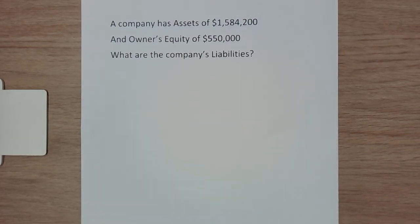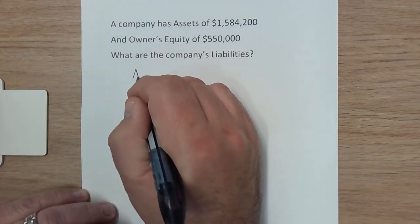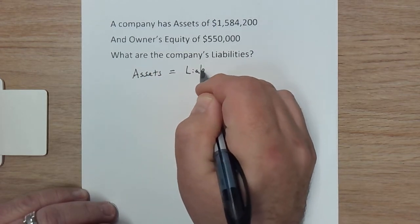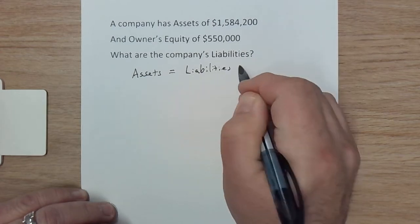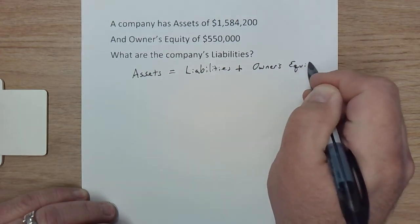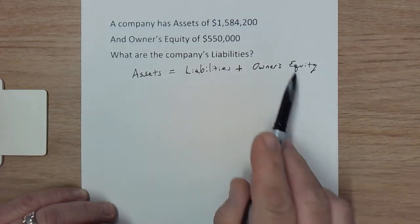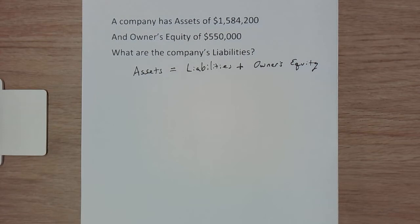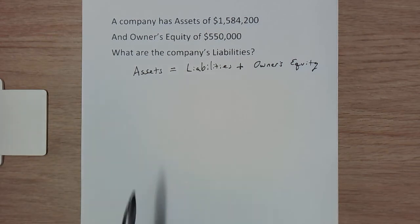I'm going to show you how you can figure that out using the accounting equation. The accounting equation tells us that assets are equal to liabilities plus owner's equity — sometimes called shareholders' equity or stockholders' equity. Keep an eye out for some differing nomenclature on that, but basically it's asking: what is the owners' equity in the company?